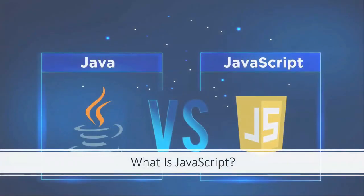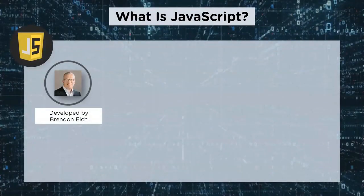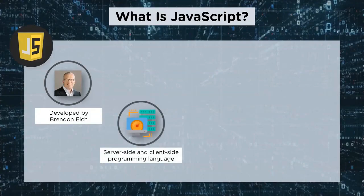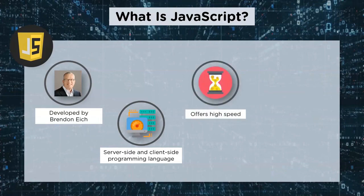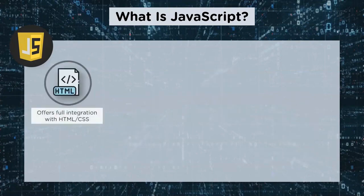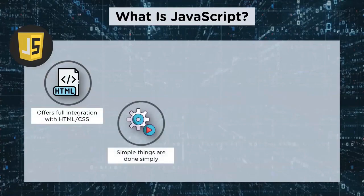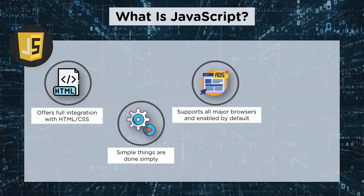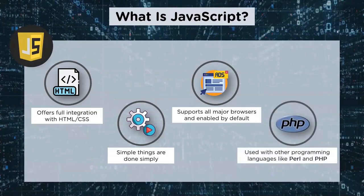Now let's understand what exactly is JavaScript. JavaScript was developed by Brendan Eich in 1995. It is a powerful server-side and client-side programming language. Users with the knowledge of JavaScript can play around with any layer of the application. One major feature of JavaScript is that it offers incredibly high speed. JavaScript also provides a wide range of frameworks and libraries like React.js, Angular and Vue. JavaScript is used in integration with HTML and CSS for web application development. Another important feature of JavaScript is the fact that simple things can be done simply. JavaScript is also cross-browser compatible and can be executed on any browser — Chrome, Firefox, Safari and Opera. It can also be used in conjunction with other languages like Perl and PHP.